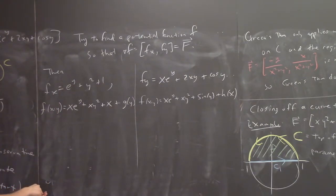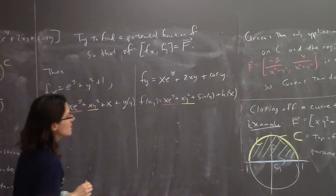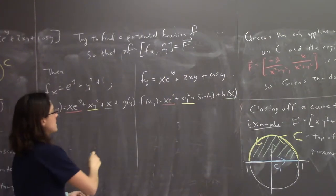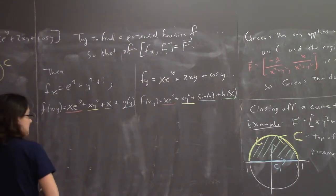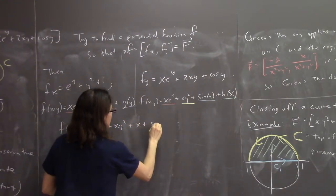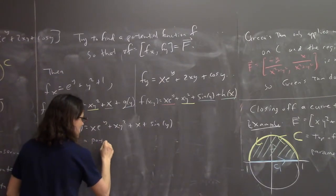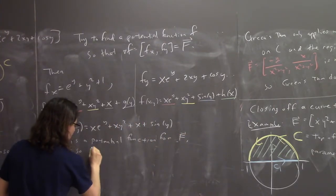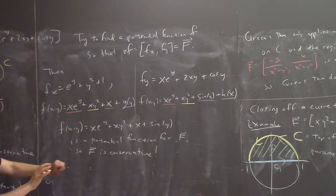Matching them up: x e to the y appears in both — happy. xy squared appears in both — happy. x from the first equation can be a function of x — good. Sine of y from the second equation can be a function of y — good. So f(x,y) = x e to the y plus xy squared plus x plus sine of y. This is a potential function for F, so F is conservative.